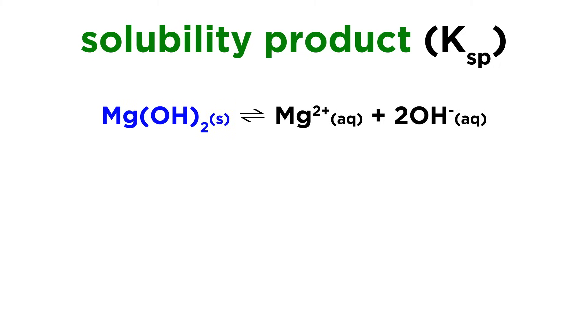If we have something like magnesium hydroxide, it's the same thing, except that dissociation produces one magnesium ion and two hydroxide ions, which means that hydroxide ion concentration will be squared in the solubility product expression.